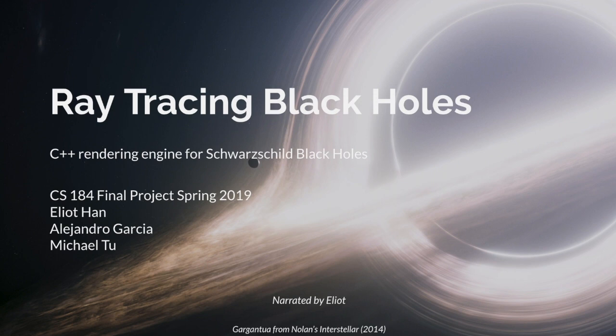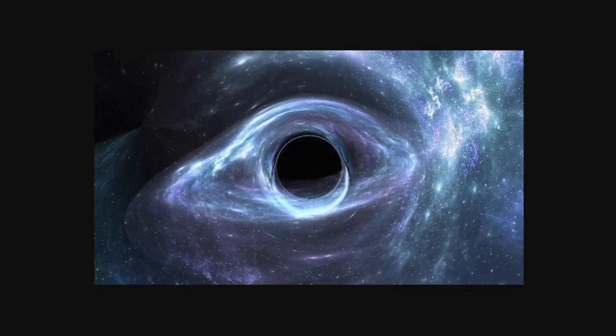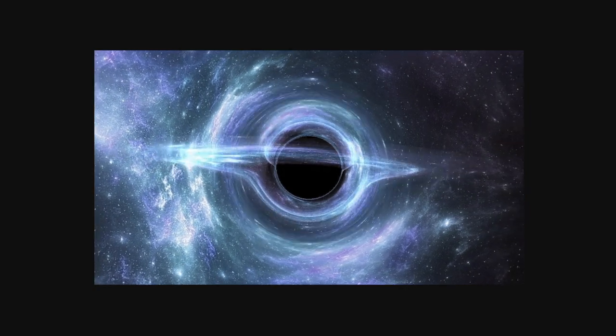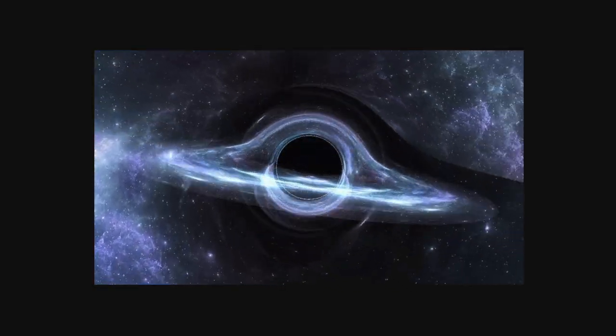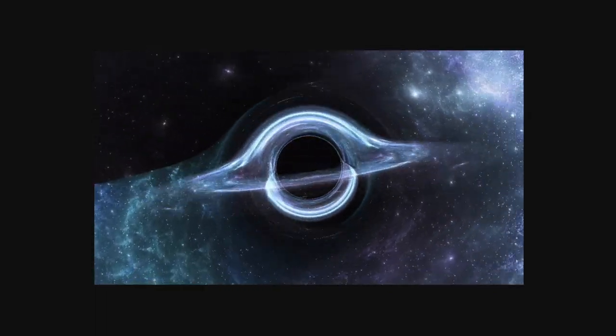For our final project, my group created a C++ rendering engine for a Schwarzschild black hole. A black hole is an extreme astronomical object that has a gravitational field so intense that it bends the path of light rays. This causes all kinds of visible distortions in a phenomenon known as gravitational lensing.